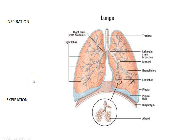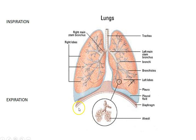How do we change pressure? We really can't change atmospheric pressure — our body doesn't have that ability. But we can change intrapulmonary pressure by changing the volume, and what allows us to change the volume of the lungs is the diaphragm, which is the main muscle of breathing.